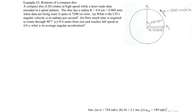For example number two, we're looking at the rotation of a compact disc. As it rotates to high speed, it attains an angular speed of 7200 RPM, or revolutions per minute. The radius of the disc is given as 6 centimeters, or 0.06 meters.